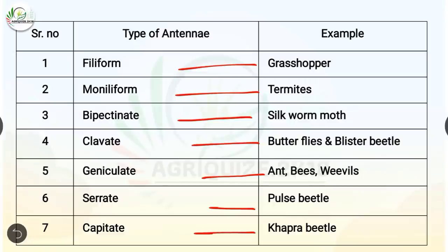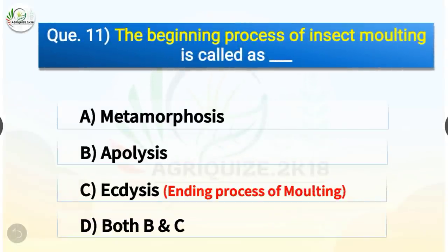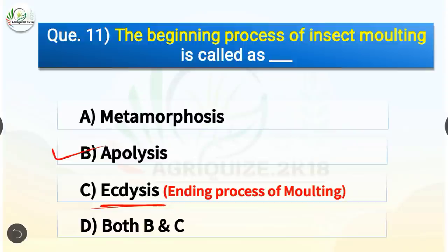Question number 11. The beginning process of insect molting is called what? The options are metamorphosis, apolysis, ecdysis, or both B and C. The correct answer is option B, apolysis. The beginning process of insect molting is called apolysis, whereas the ending process is ecdysis. Insect molting takes place in two processes: apolysis is the beginning process while ecdysis is the ending process.